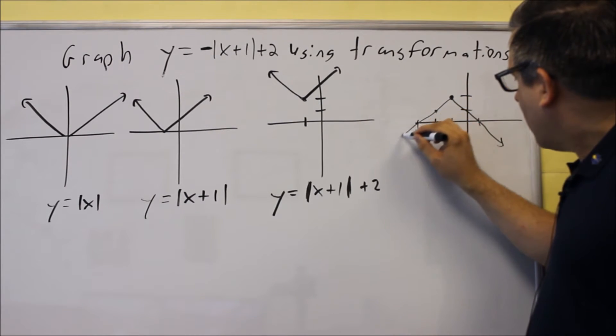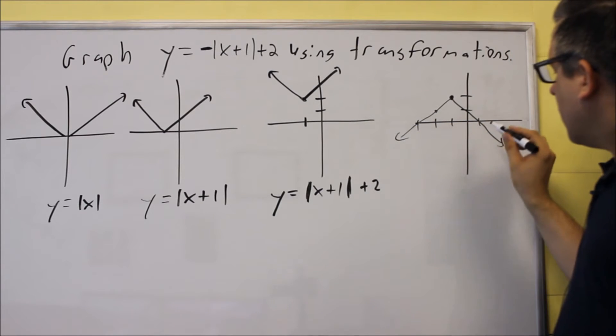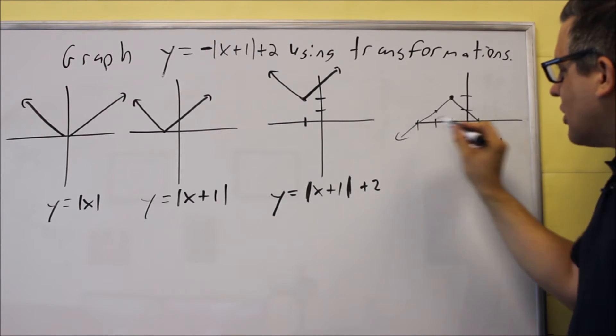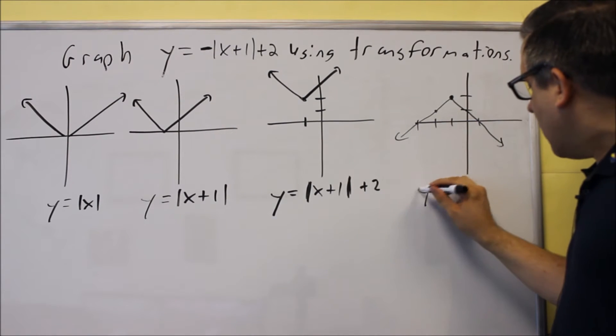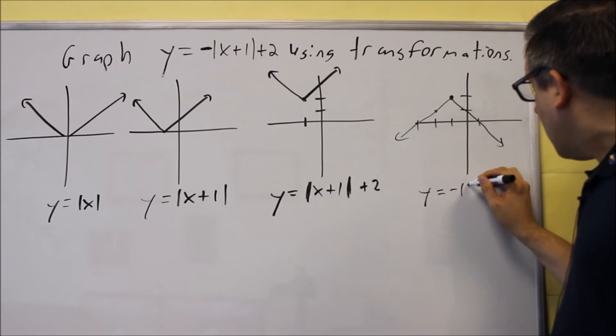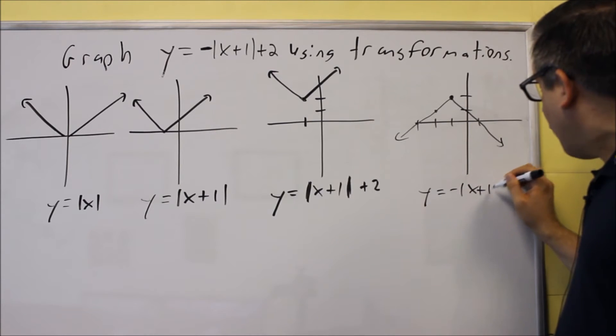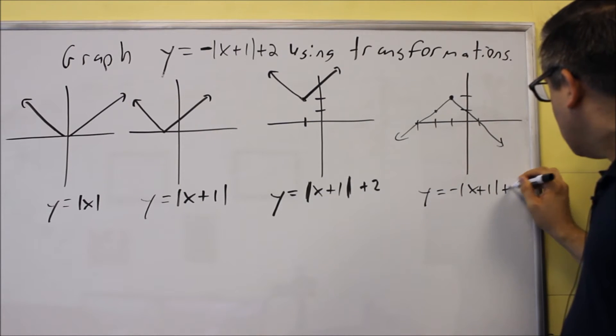Now we have the two places where it crosses the x-axis: at negative 3 and positive 1. So this here would be our final answer.